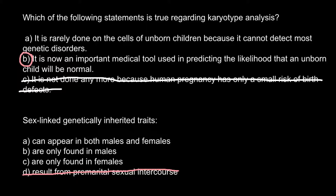Because the younger the parents, the less probability that they will have genetic disorders in their progeny. The older parents become, the more probability of genetic disorders occurring during, for example, meiosis — sperm formation or egg formation. Some genetic disorders are directly influenced by the age of the parents, for example trisomy 21 or Down syndrome.